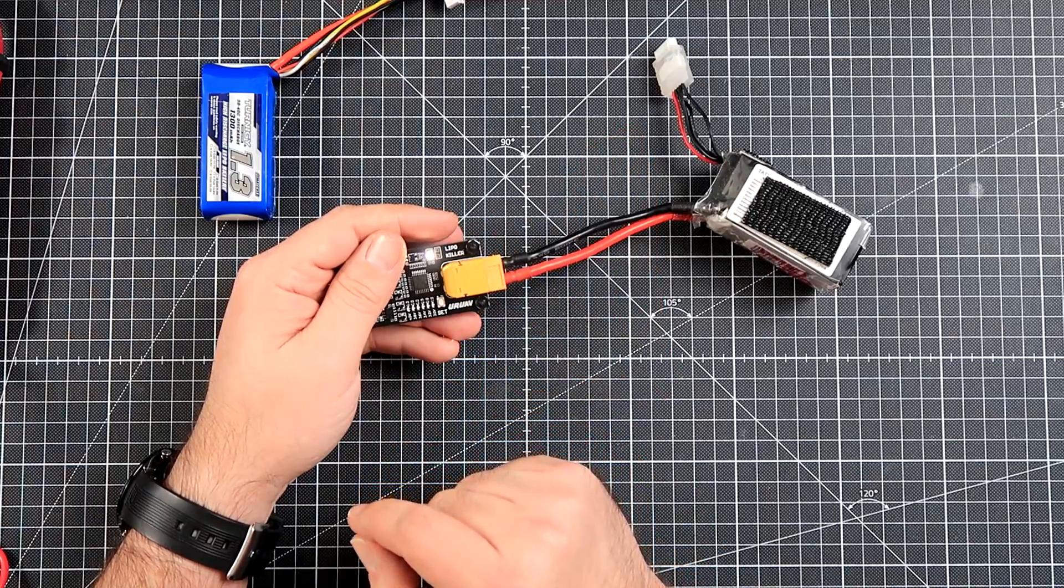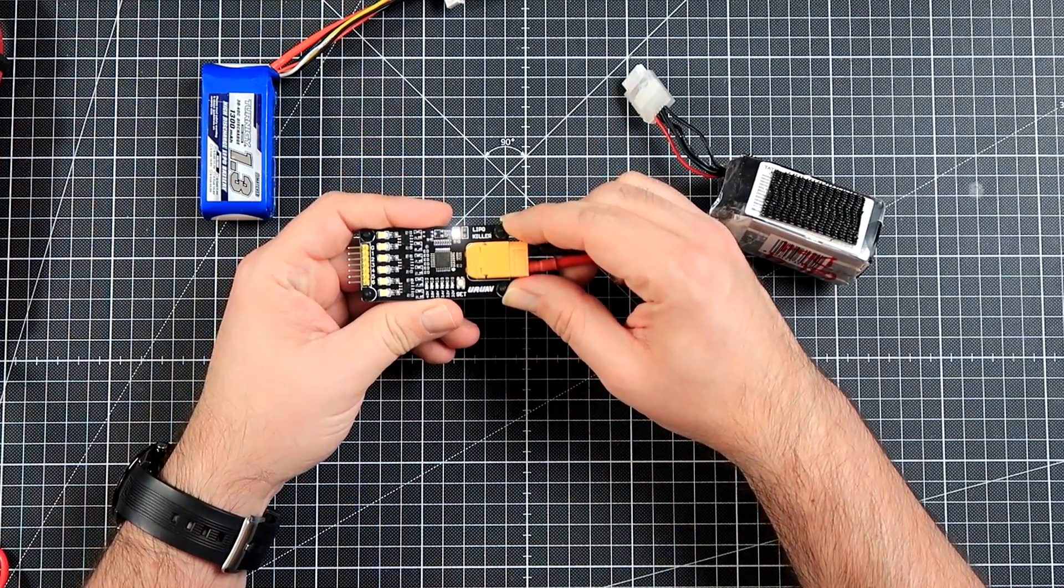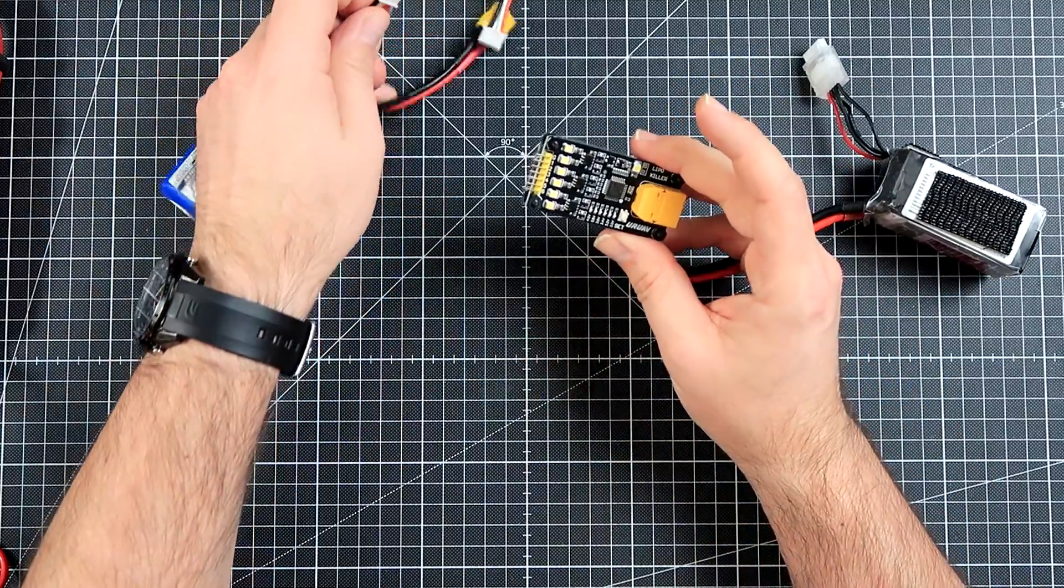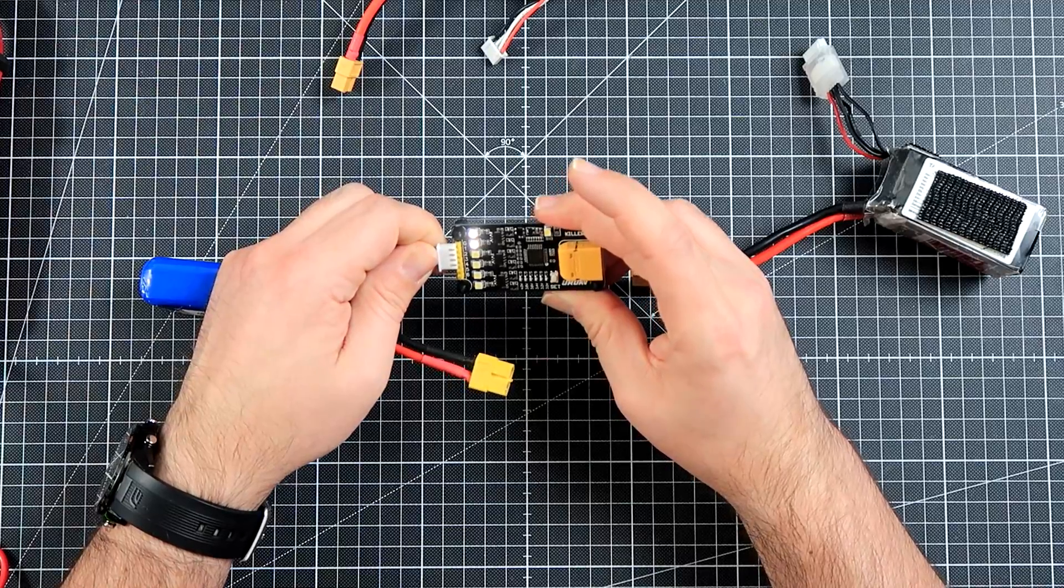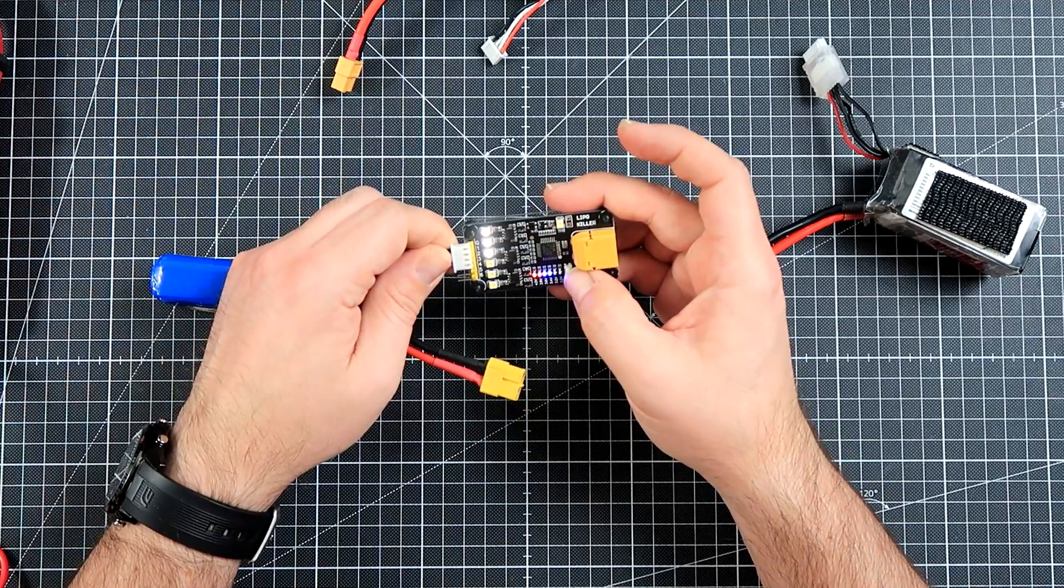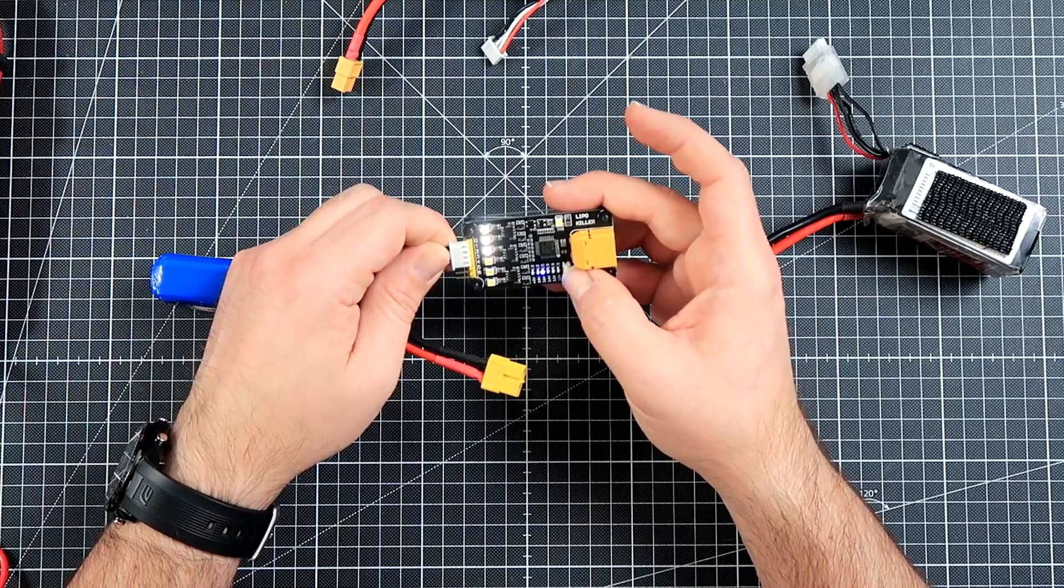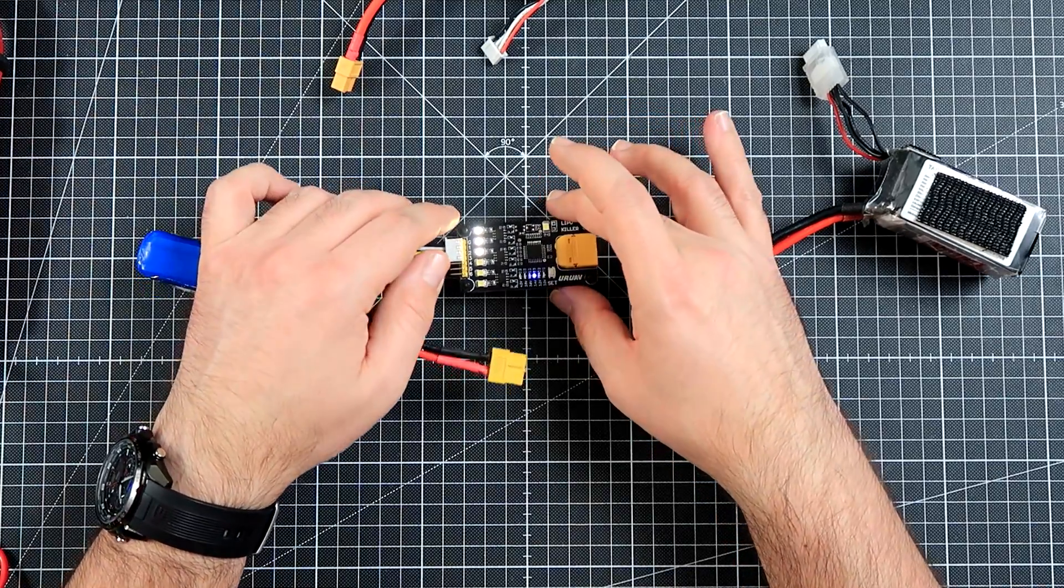The second usage is on this side, when you plug your balancing lead to the connector, use the button to select the voltage down to which you want to discharge the battery, and leave it there.